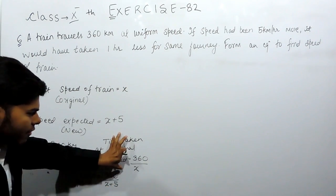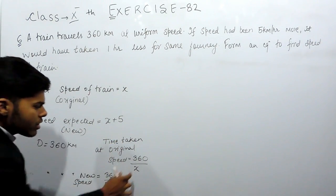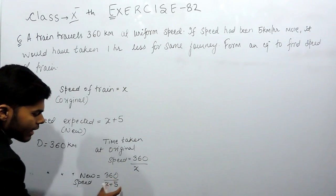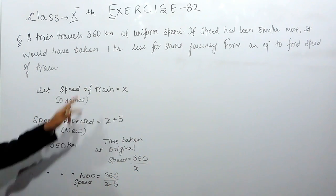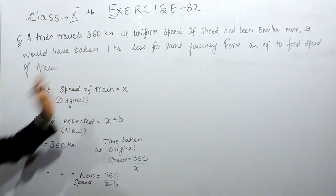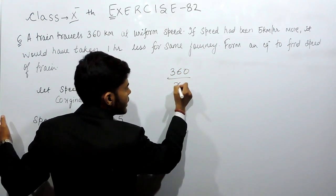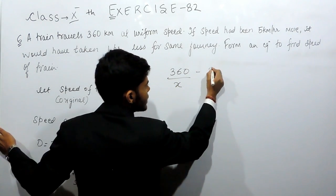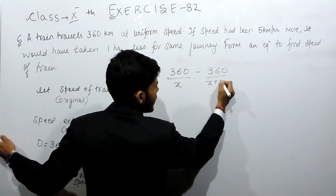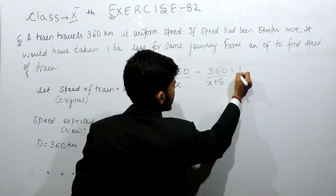Now, this time will be more than this time because the denominator is less and here the denominator is more. And this difference will be equals to 1 hour. This means that time taken earlier minus time taken now is equals to 1.